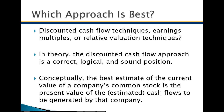The only tricky part with discounted cash flow is deciding how many years are appropriate for the business — five, ten, fifteen? That depends on the industry, which is why you need financial analysts who specialize in specific industries to say how many times earnings is typical. For example, for a particular industry, companies typically pay eight times earnings, so eight hundred million would be a fair price for buying a given business.